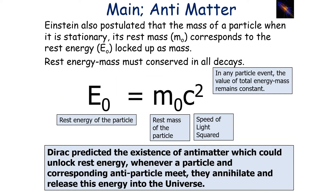This effect would not be noticeable on the scale of humans, but would be noticeable on the scale of particles. Einstein posited that the rest mass of a stationary particle corresponds to the rest energy locked up as mass. In all decays and in all situations involving particles, rest energy and mass must always be conserved — the total energy-mass remains constant. This is indicated by the equation E = mc², where c is the speed of light.